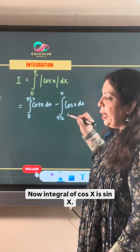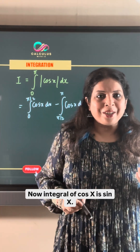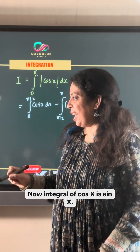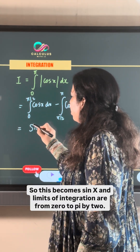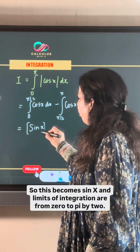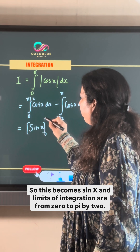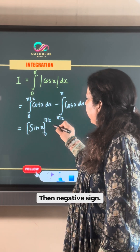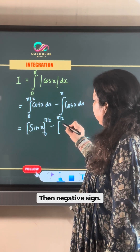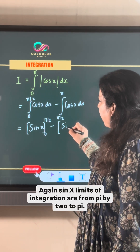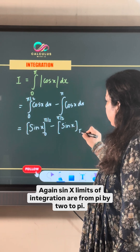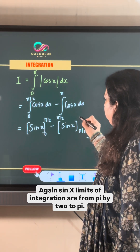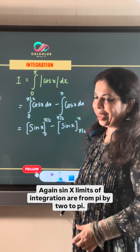Now, the integral of cos x is sin x. So this becomes sin x with limits of integration from 0 to pi by 2, then negative sin x with limits of integration from pi by 2 to pi.